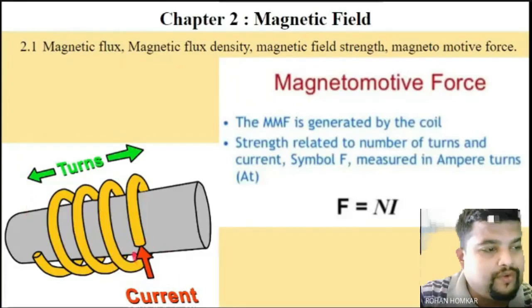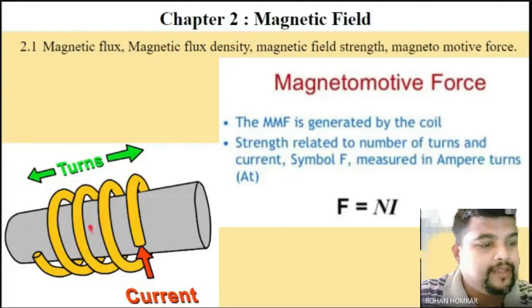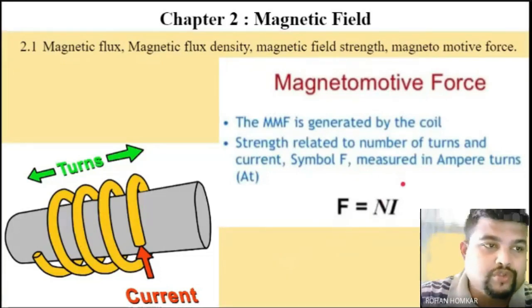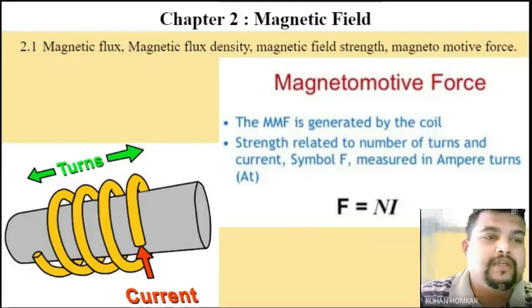So how much current is flowing through the coil and how many turns your coil has - from this you can calculate the magnetomotive force. In short form we call it MMF and you can calculate it.